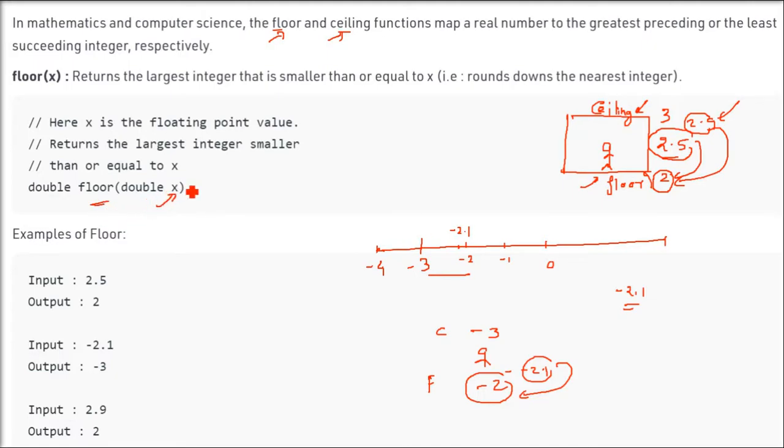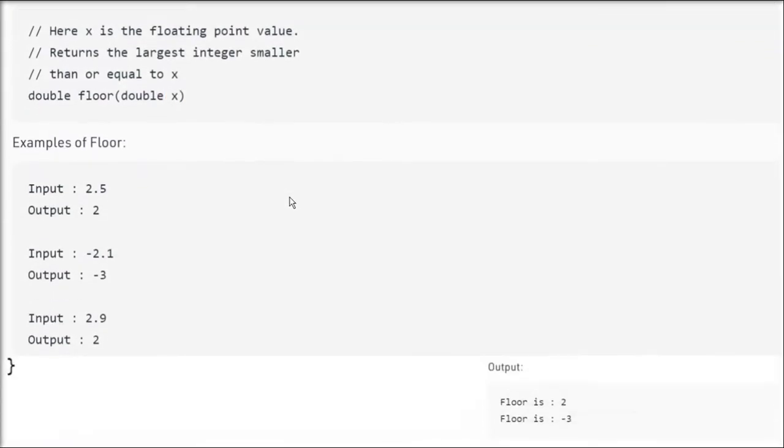The input is double. The output is also double. So the return type is double. So as we just saw 2.5, the lower is 2. So floor is 2. So floor function will give you 2 here.